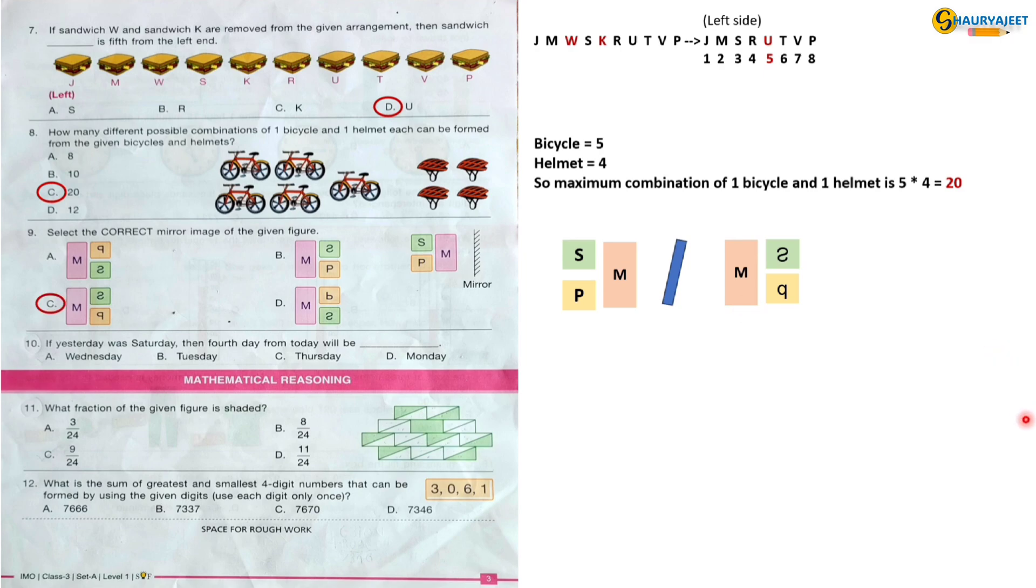Question 10: If yesterday was Saturday, then fourth day from today will be? If yesterday was Saturday, then today is Sunday. Fourth day from Sunday is Wednesday. So the correct option is option A, Wednesday.